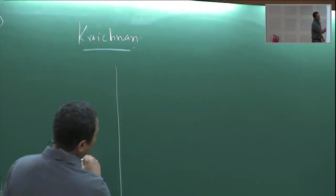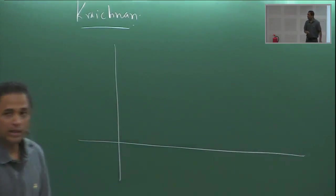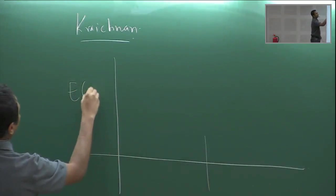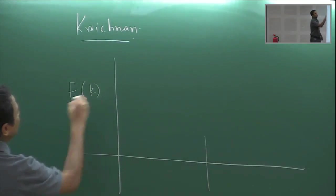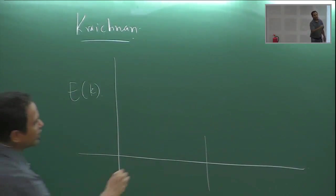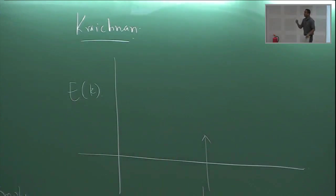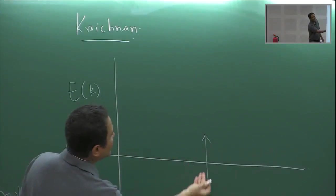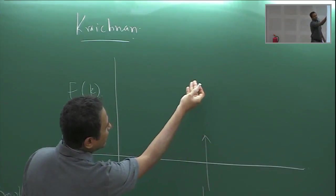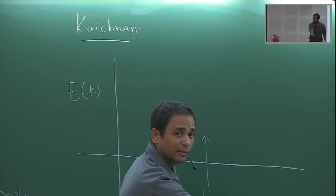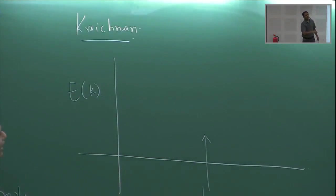Kraichnan built upon Kolmogorov's ideas on inertial ranges and cascades and applied them to 2D turbulence, taking into account the additional enstrophy constraint. The qualitative picture is: if I plot the energy spectrum versus wavenumber and force at some wavenumber k_f, in 3D you expect energy to flow downscale and be dissipated.